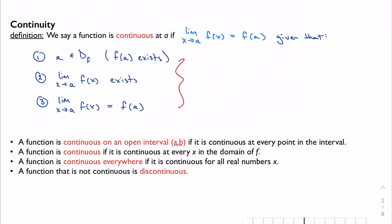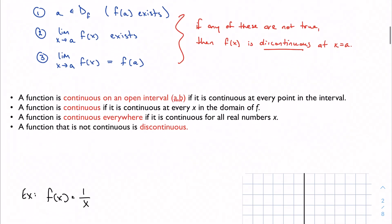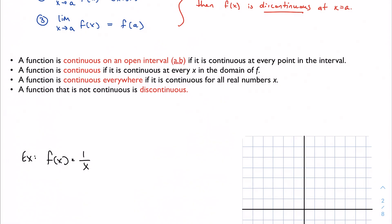If any of these are not true, then we say that f(x) is discontinuous at x equal to a. So that's kind of the basic idea.